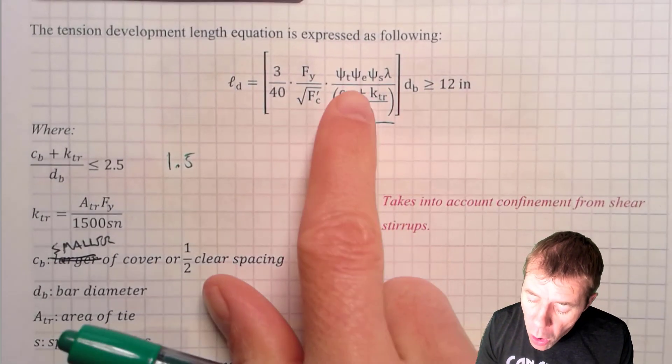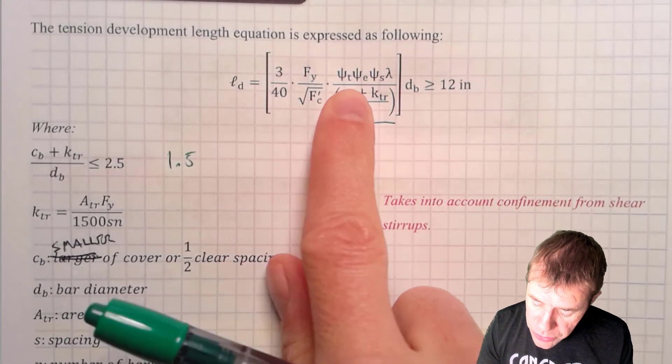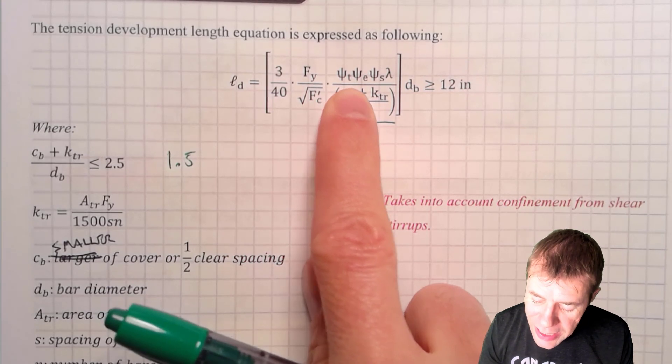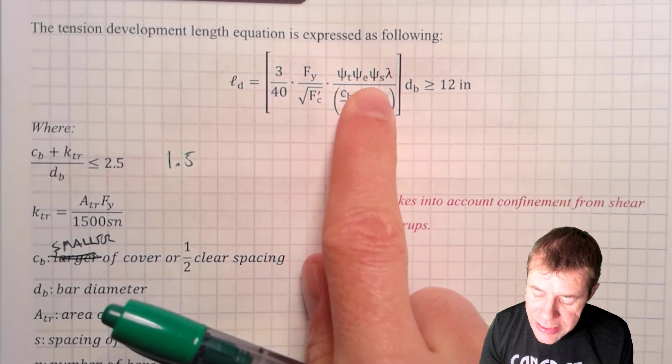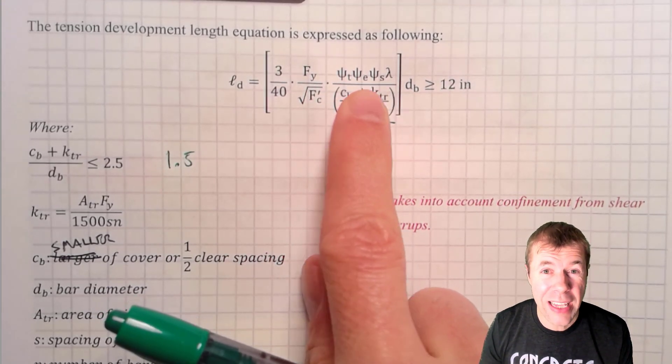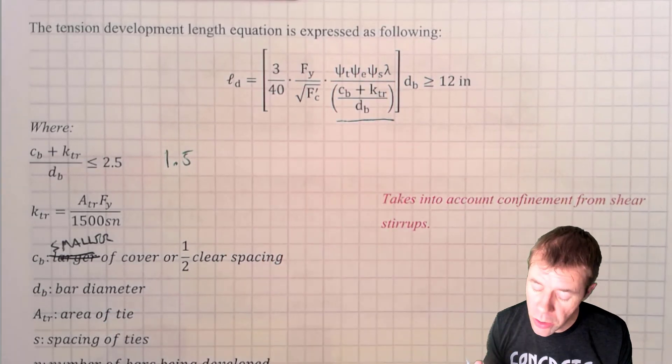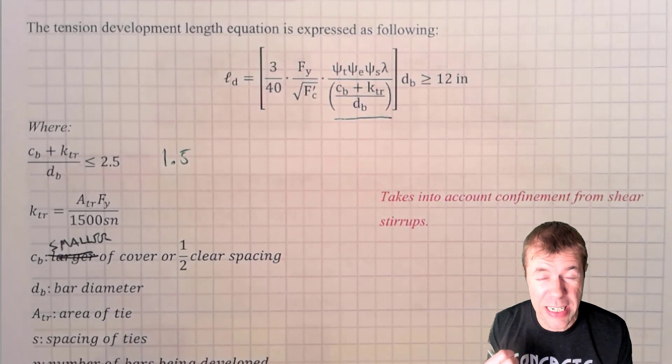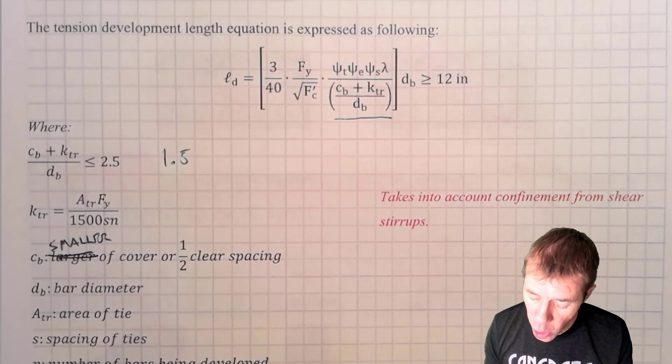So, in this problem, there are all these other terms. There is something called psi T, psi E, psi S, and lambda. These are things that are multiplied in the numerator, so they either increase or decrease our development length.